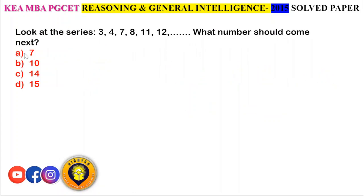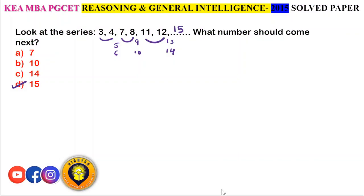Look at the series: 3, 4, 7, 8, 11, 12 — which number comes next? Here 3 and 4 are consecutive, then 5 and 6 are skipped. Then 7 and 8 are consecutive, then 9 and 10 are skipped. Then 11 and 12 are consecutive. So after 12, the numbers 13 and 14 must be skipped, and the next number will be 15. Option D, 15, is the answer.